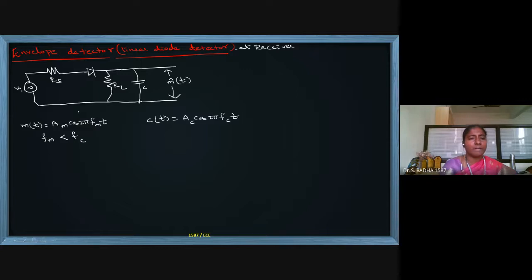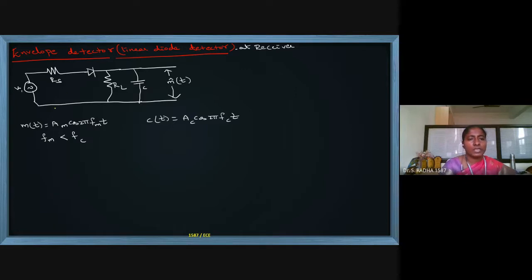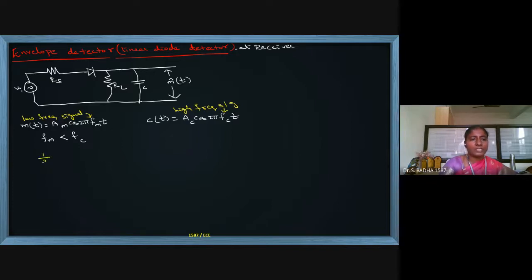f_m is the low frequency signal and f_c is the high frequency signal, so f_m < f_c. If we take the inverse: 1/f_m > 1/f_c — the inequality will change when we invert f_m and f_c.